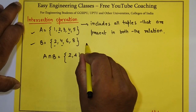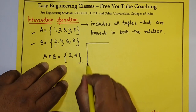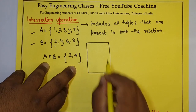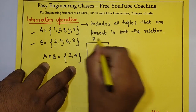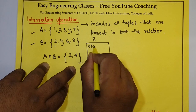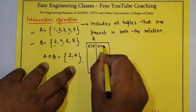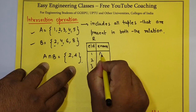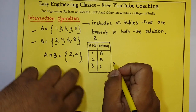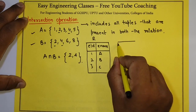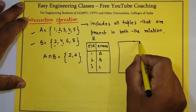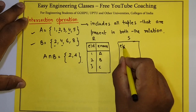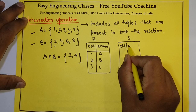Suppose if I have a table like this — table R with employee ID and employee name. And on the other side of the association, there is another table S.